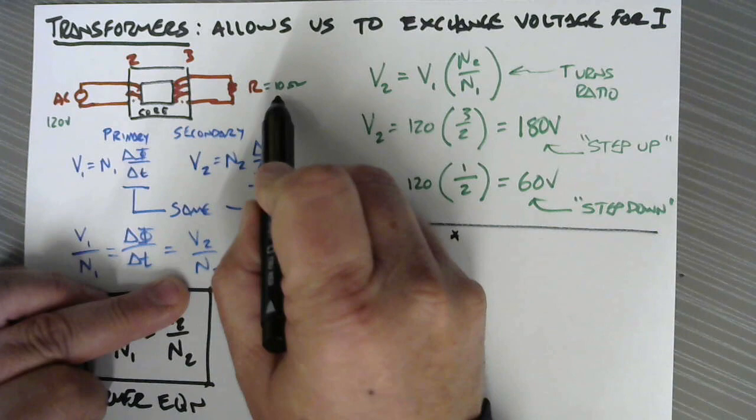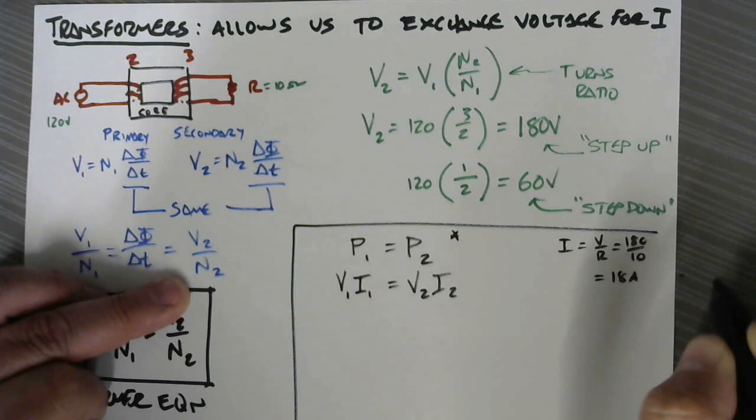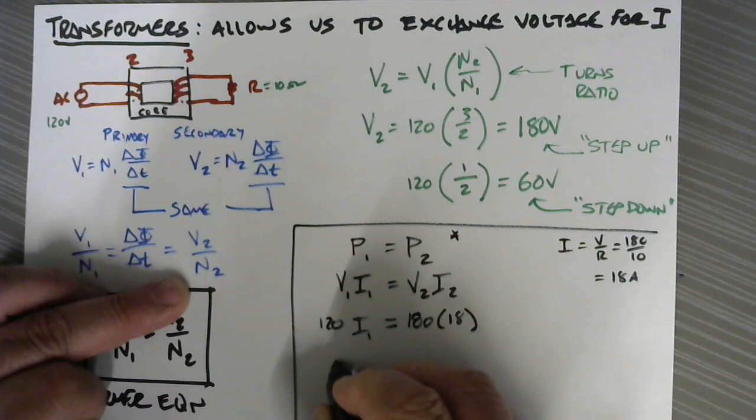And 10 ohms. So that means that the current is equal to the voltage divided by the resistance: 180 divided by 10, that's going to be 18 amps. So over here we have 180 volts and 18 amps, and that's going to equal 120 volts times I₁.